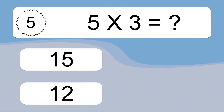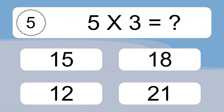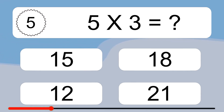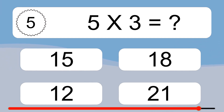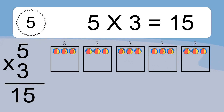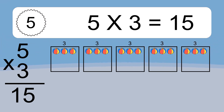5 times 3 equals what? 5 times 3 equals 15. We have 5 boxes, and each box has 3 colorful balls inside. If you count all the balls in all the boxes together, you will have 5 times 3 balls. This equals 15 balls.